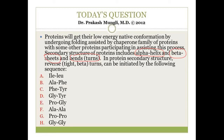The question here is: in a protein secondary structure, the bends — that is the reverse tight beta turns — can be initiated by which of the following sequences? Two amino acids are given from option A to option H.